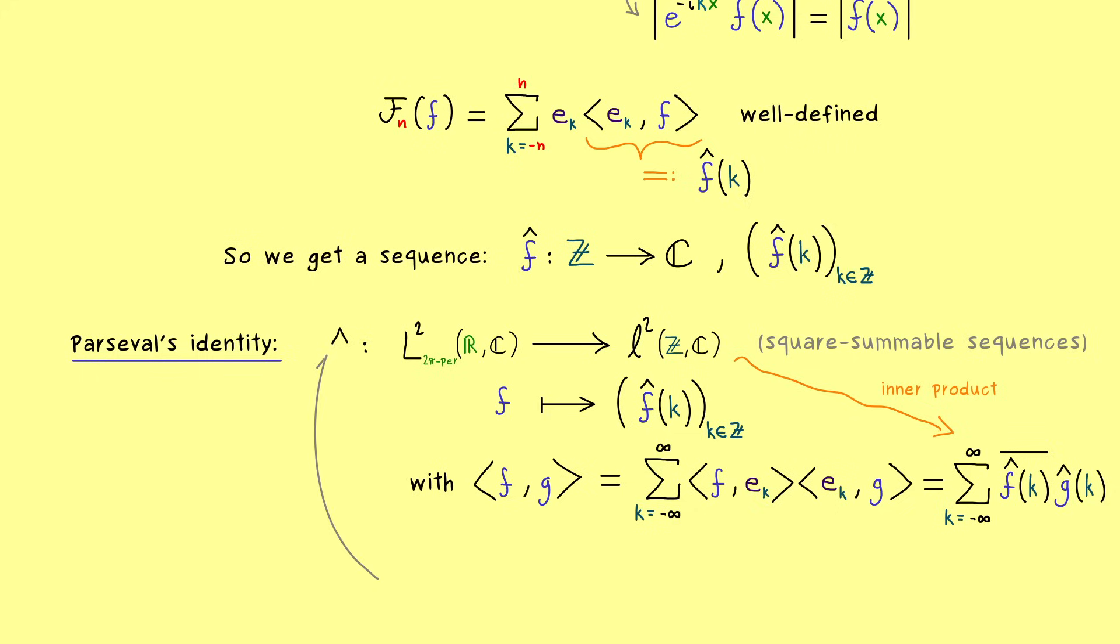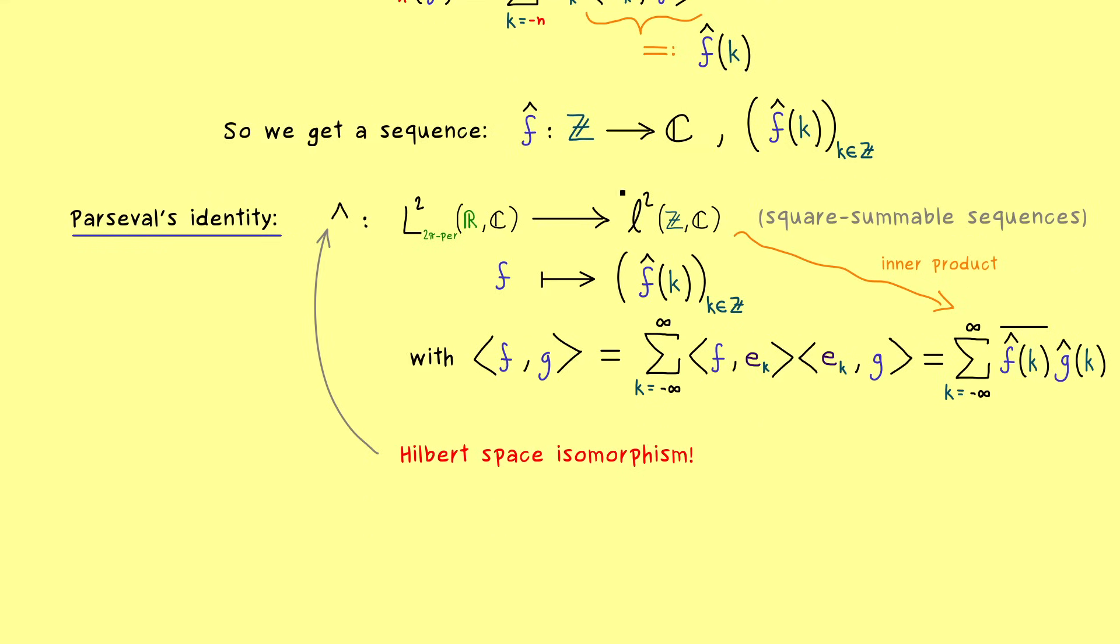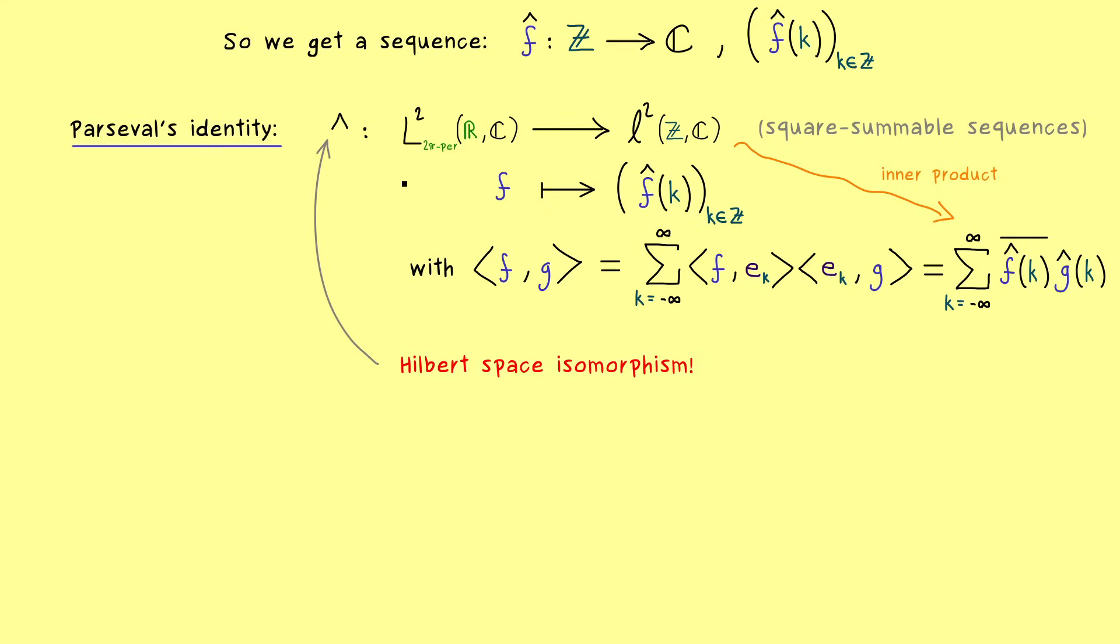However this also tells us that we have a one to one translation of the inner product as well. Indeed we would say that this hat transformation given as a linear map is a Hilbert space isomorphism. It's a translation between the two inner product spaces which are essentially the same thing. So you see Parseval's identity is really nice and it tells us that we can jump between these two spaces as much as we want. However this nice connection will break down when we extend the space on the left hand side.